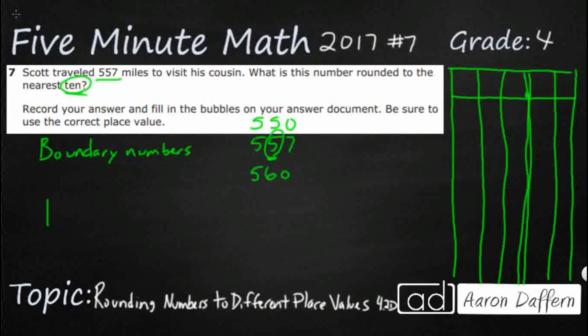So really, if we were to put this in a number line, what we're looking at is 550 and 560. Those are our two boundary numbers. And let's just go ahead and cut the difference there. And that's going to be 555.